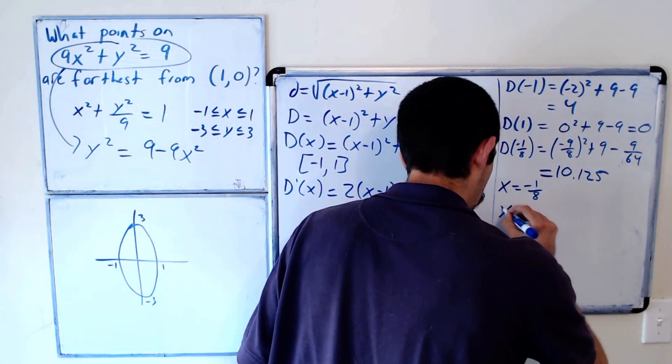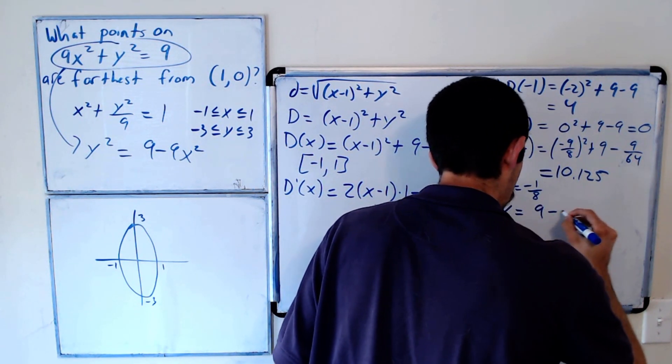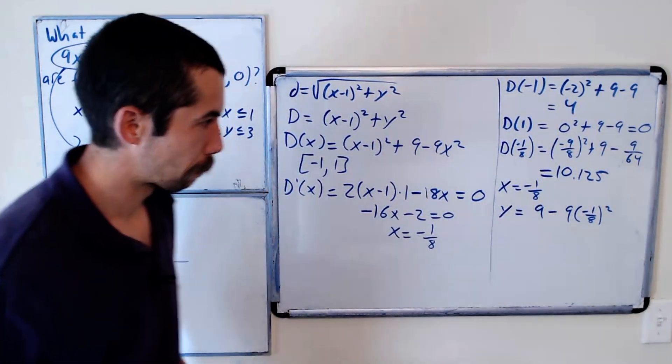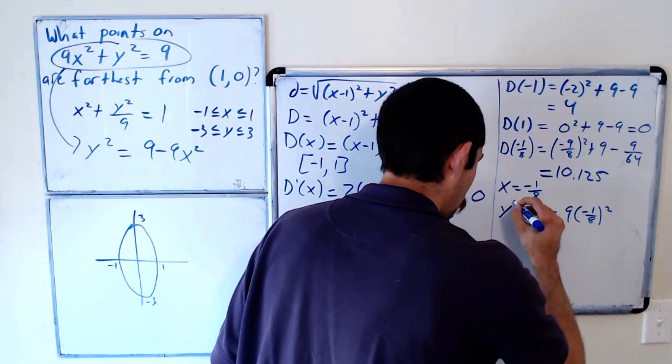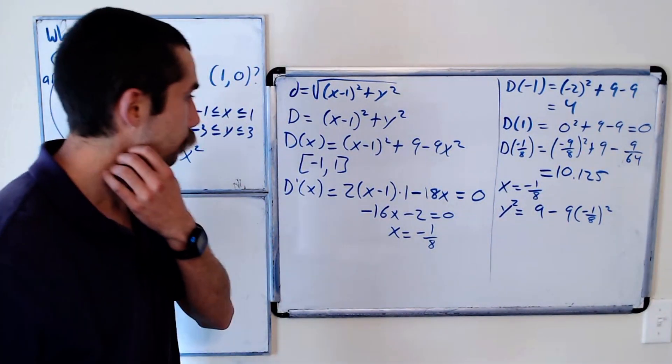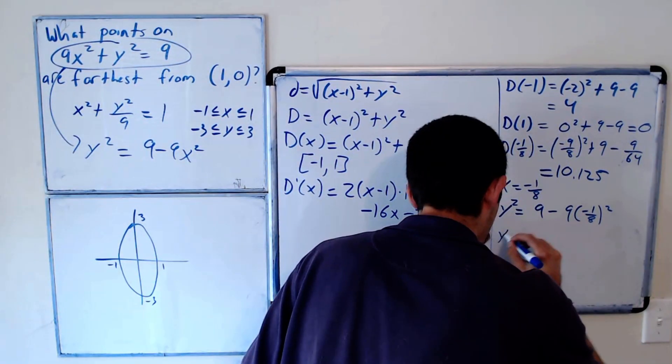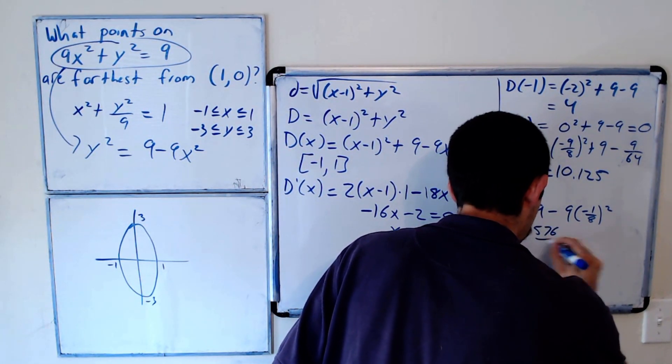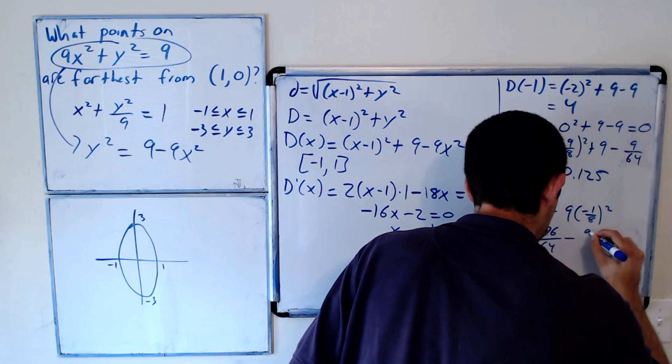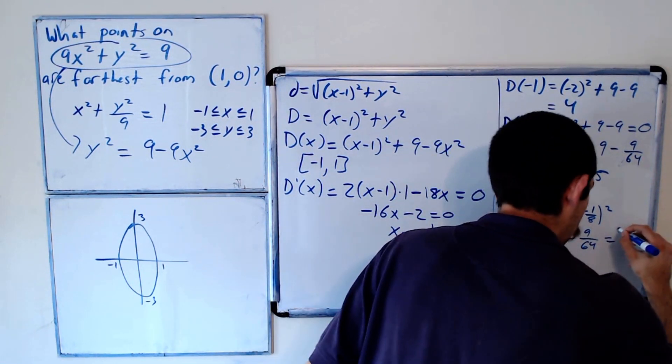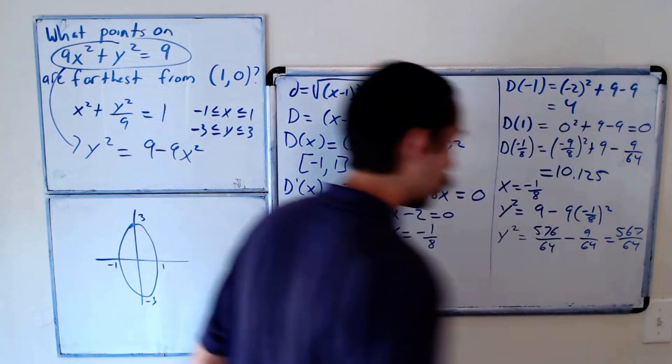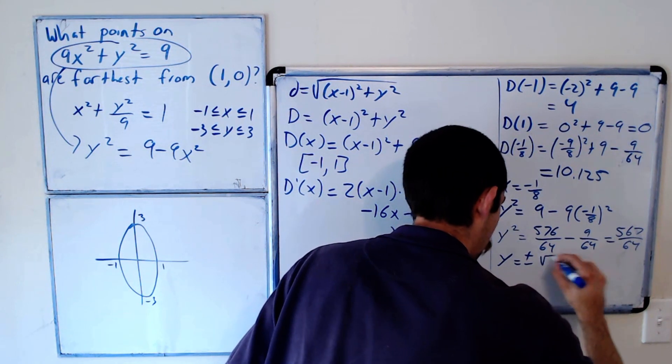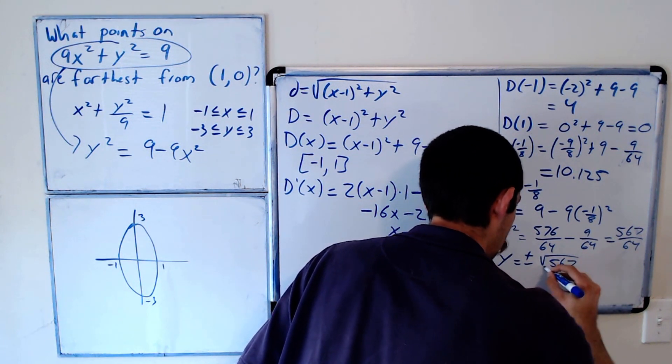So we have y squared equals 9 minus 9 times negative 1 eighth squared. This is 576 over 64 minus 9 over 64, which is 567 over 64. Taking the square root, we get y equals plus or minus the square root of 567 over 8.